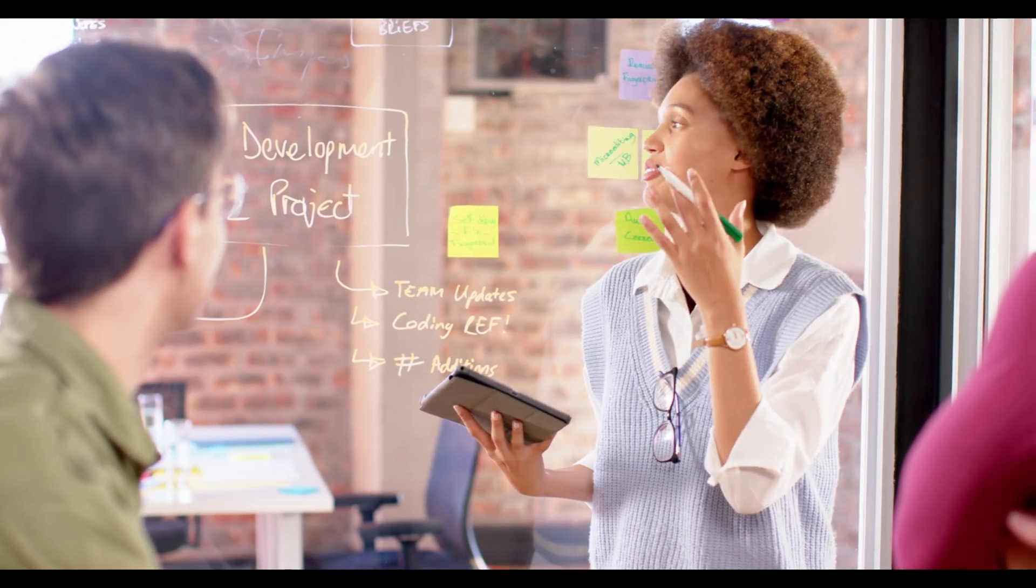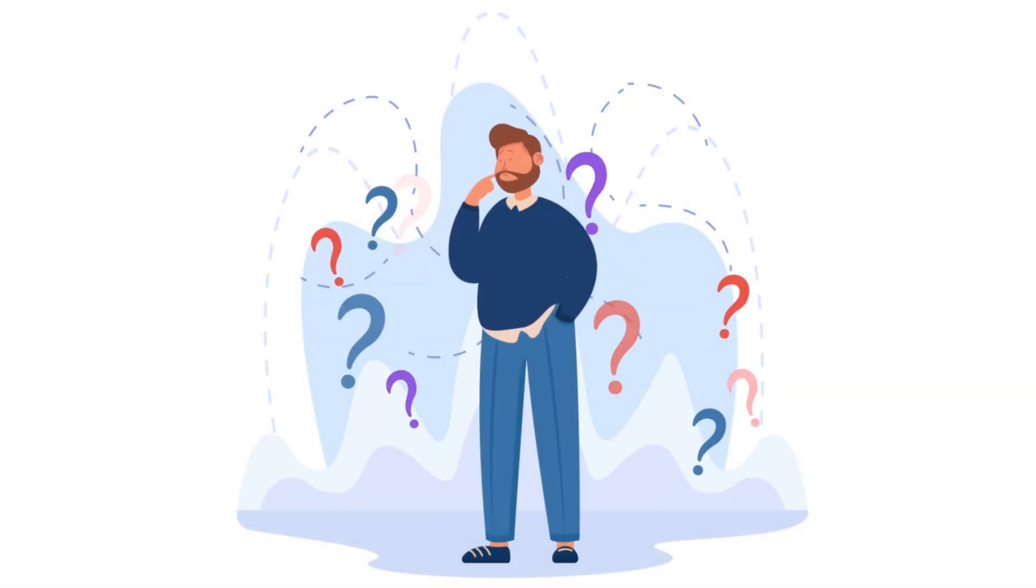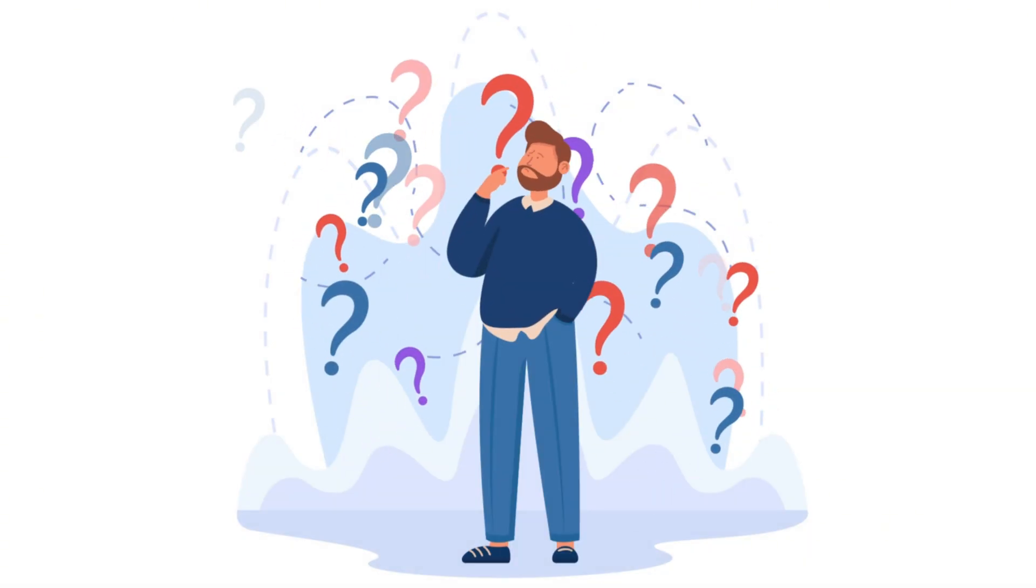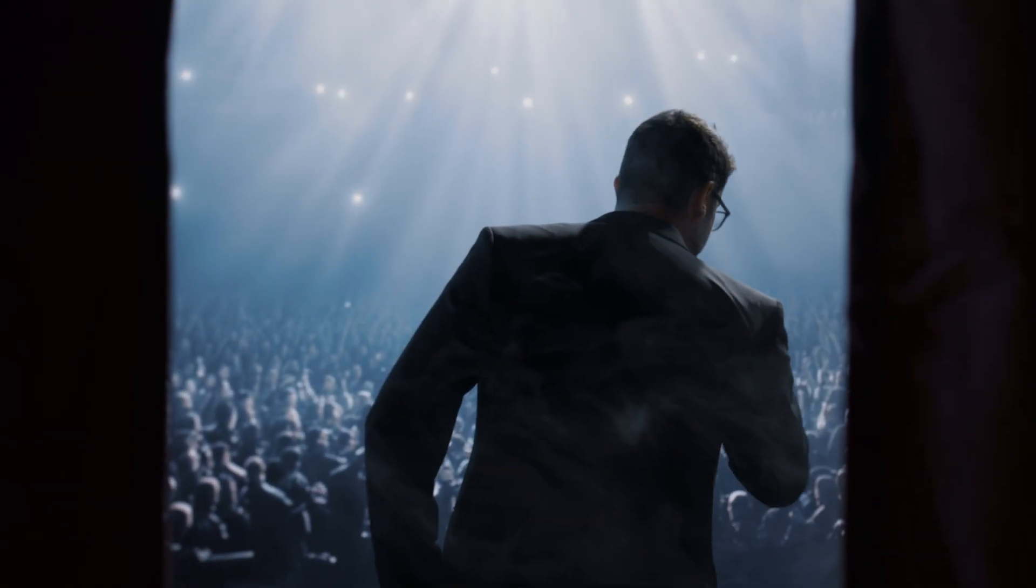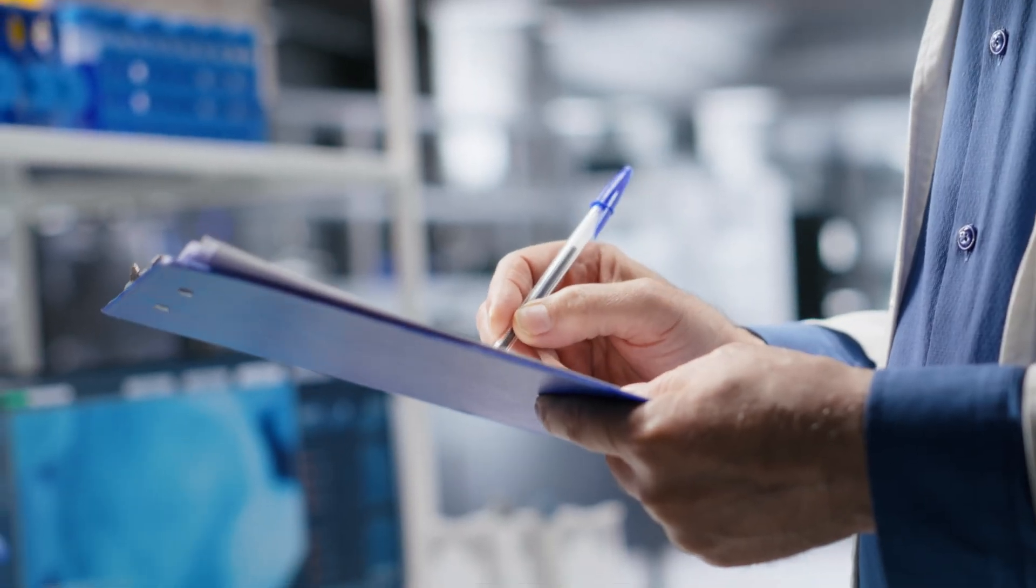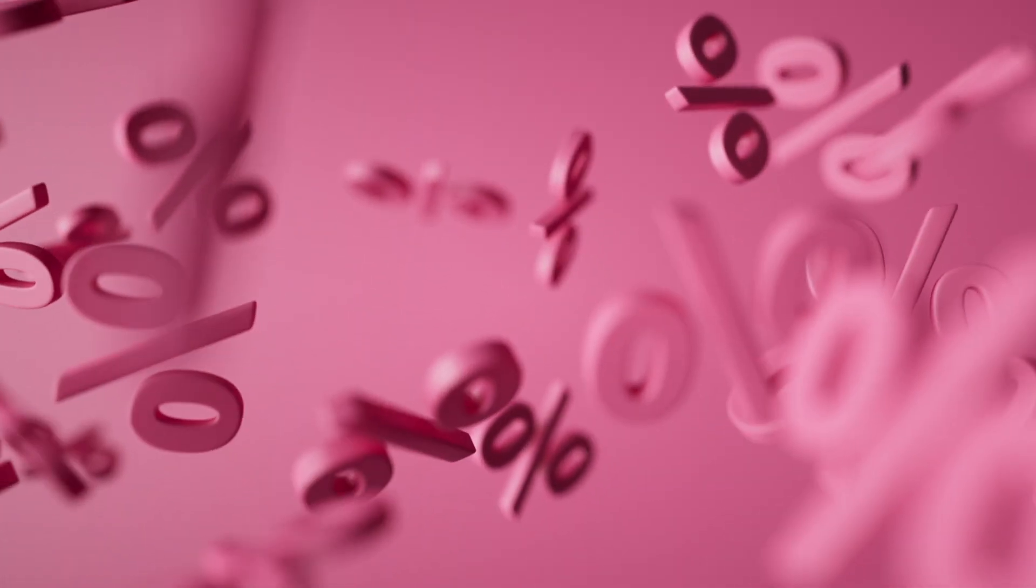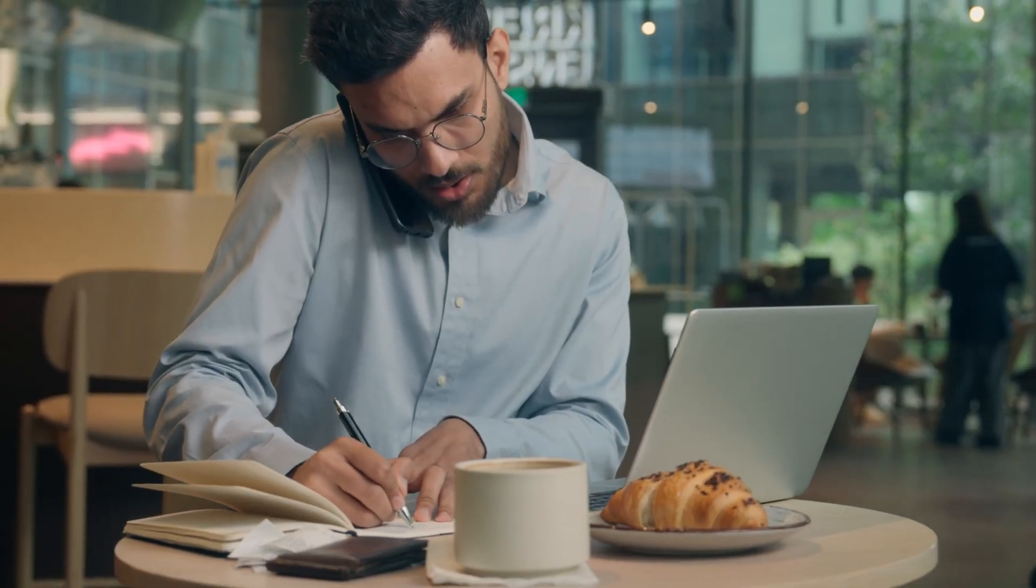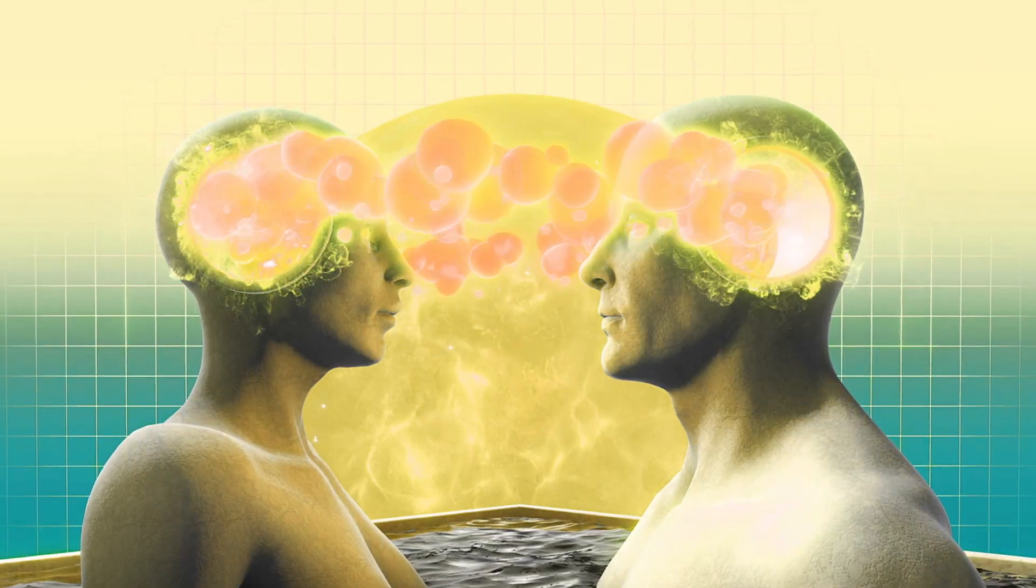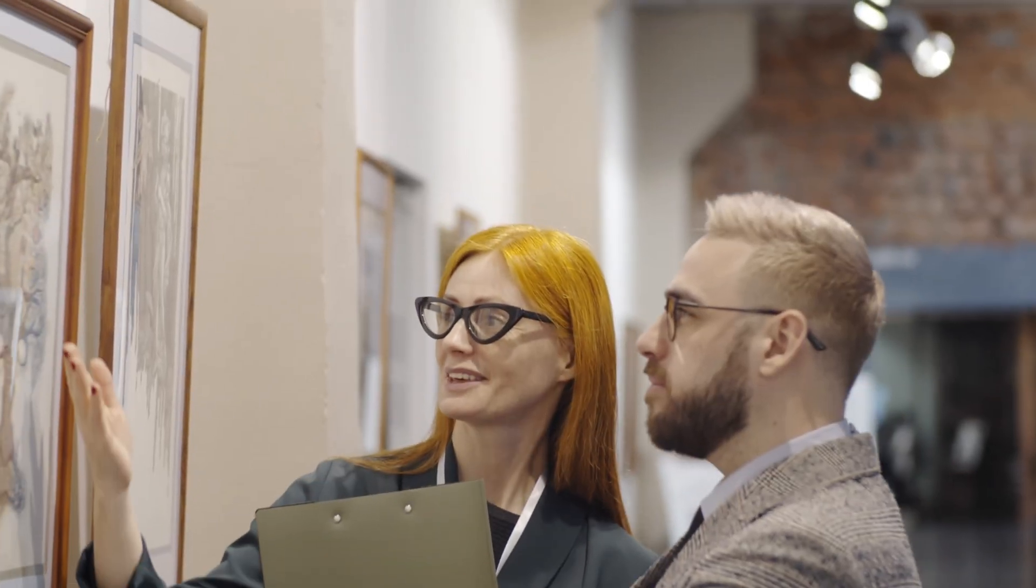Your working memory holds about seven items at once. When you prepare a response, your prefrontal cortex is occupied, rehearsing what you'll say next. You're not listening. You're performing. MIT: People retain only 25% of what's being said when simultaneously planning their response. Three quarters of the conversation lost because you were too busy being clever.